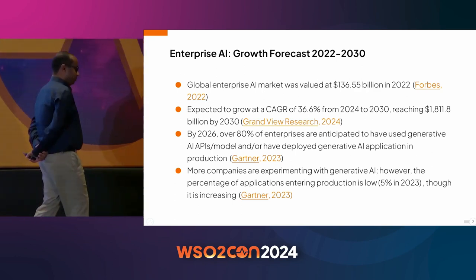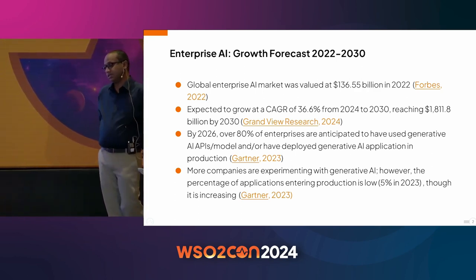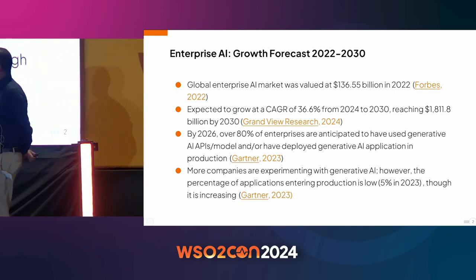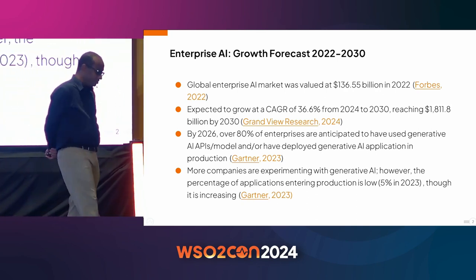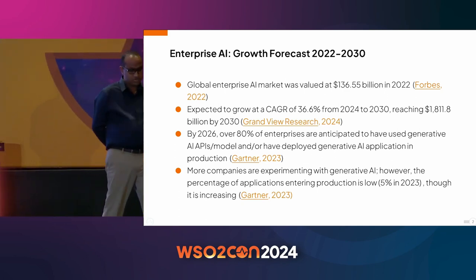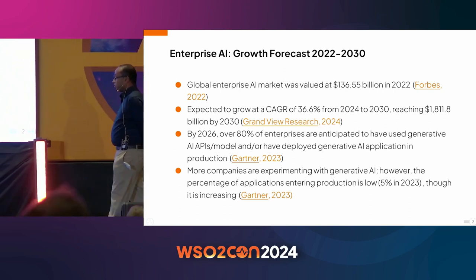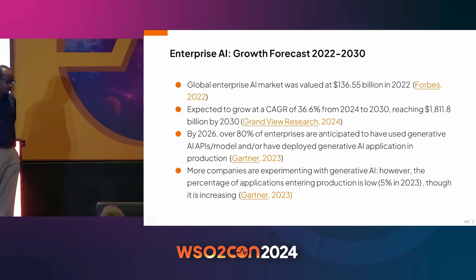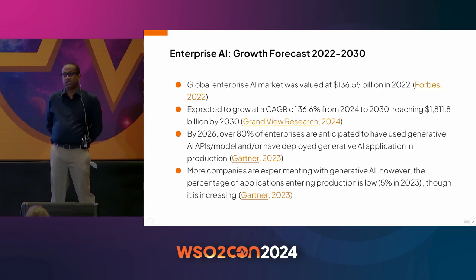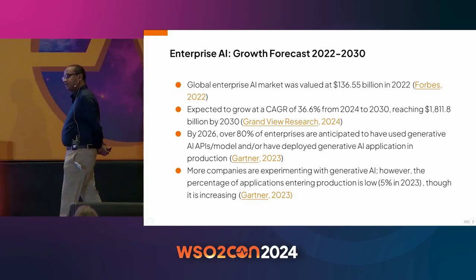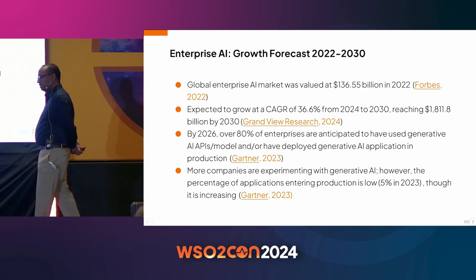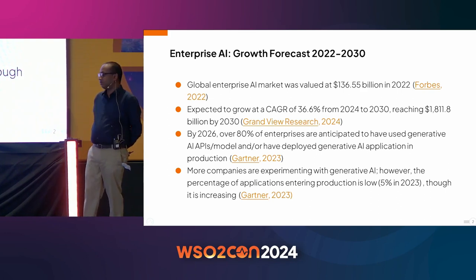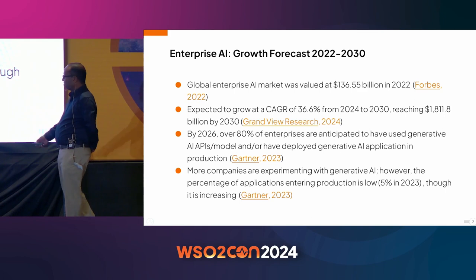Generative AI is contributing to this growth, which is why I'm focusing more on the Gen AI side. One interesting finding is that by 2026, 80% of organizations will have used a Gen AI API, model, or deployed a Gen AI application in production. However, another finding is that although many of us are experimenting, the number of applications entering production is still quite low — less than 5% as of 2023.